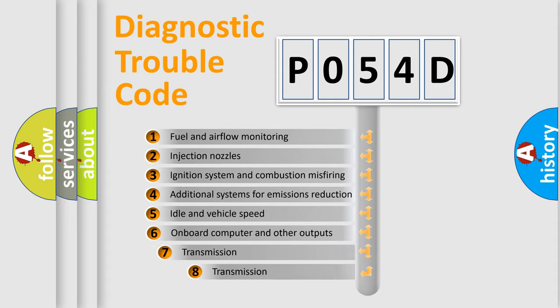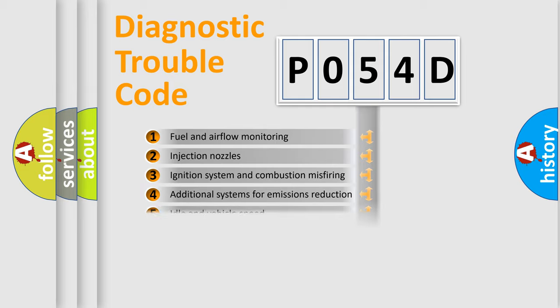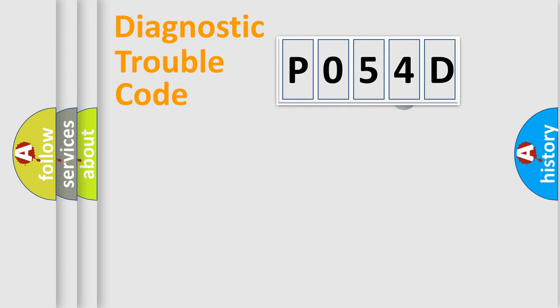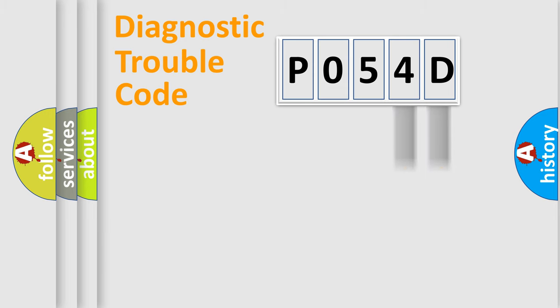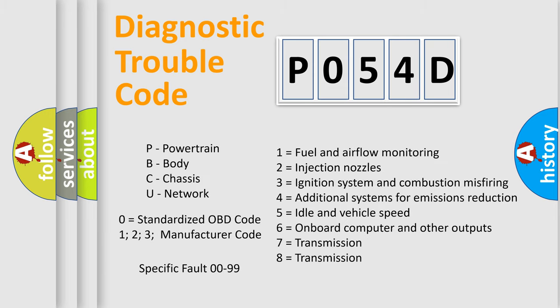The third character specifies a subset of errors. The distribution shown is valid only for the standardized DTC code. Only the last two characters define the specific fault of the group. Keep in mind that such a division is valid only if the second character code is expressed by the number zero.